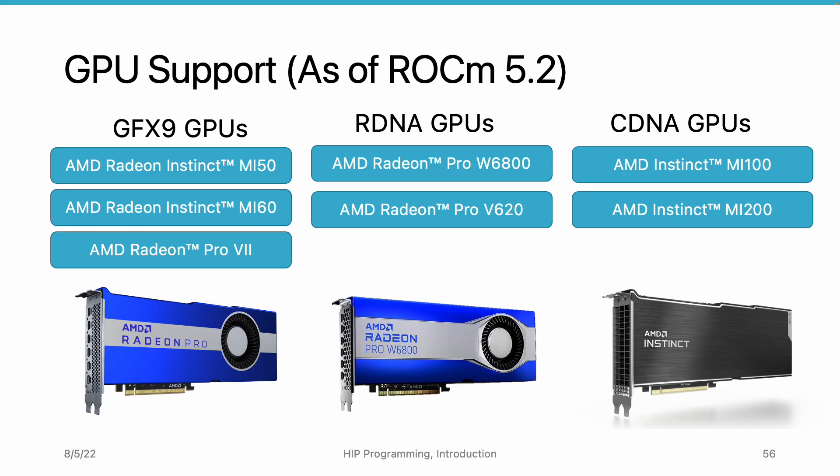There are some older GPUs like GFX 8 series GPUs such as the Fury Nano and RX 480. You can still run ROCm on those GPUs. However, they are not officially supported, so you can probably run the program and get correct results, but the performance may not be ideal.